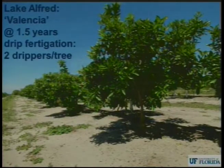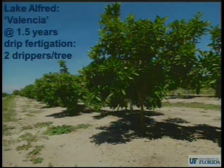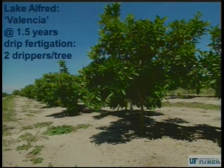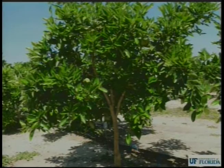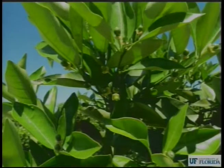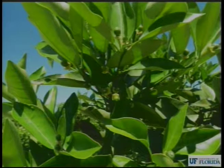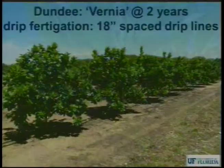We've been proving and verifying the open hydroponic system in Florida for the last five years, and we're very excited with the results. Here's the most recent one at Lake Alfred — Valencia on Swingle at one and a half years, grown with drip fertigation, two drippers per tree. These photos were taken just last week. We see a nice, well-grown tree at one and a half years old. If you look close up, you'll notice it had a tremendous flowering and fruit set. Of course, we have to wait to see what stays on the tree, since it's very young, but it's off to a flying start.